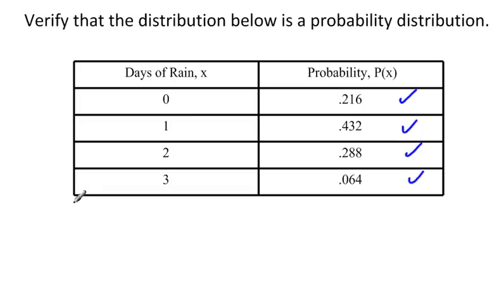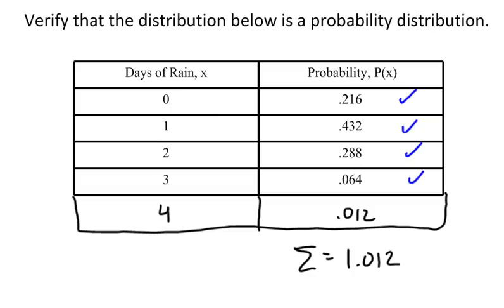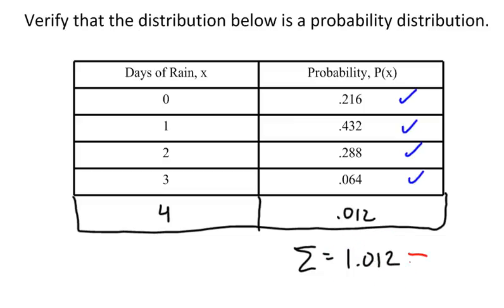What if I had one more row in this table? What if the days of rain had one more outcome — outcome 4 — with a probability of 0.012? Then when I add all of these together, I would get a sum equal to 1.012. That is not equal to 1, so if it had that one more outcome with a probability of 0.012, this distribution would not be considered a probability distribution.